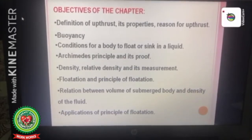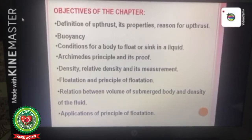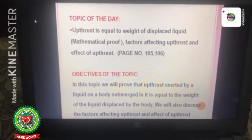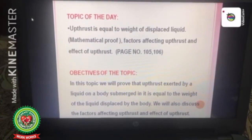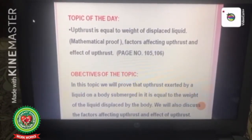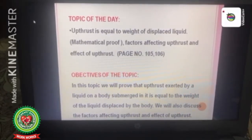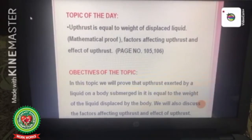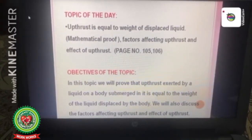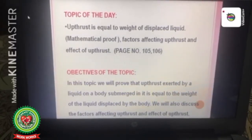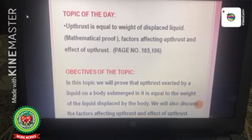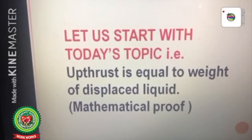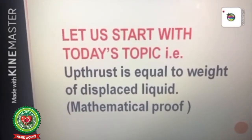Further objectives include: Archimedes' principle and its proof, density, relative density and its measurement, flotation and principle of flotation, relation between volume of submerged body and density of the fluid, and applications of the principle of flotation. Our topic of the day is: upthrust is equal to weight of displaced liquid — mathematical proof, factors affecting upthrust, and effect of upthrust. These topics are given on page number 105 and 106 of your books. The objective is to prove that upthrust exerted by a liquid on a submerged body equals the weight of the liquid displaced by the body.